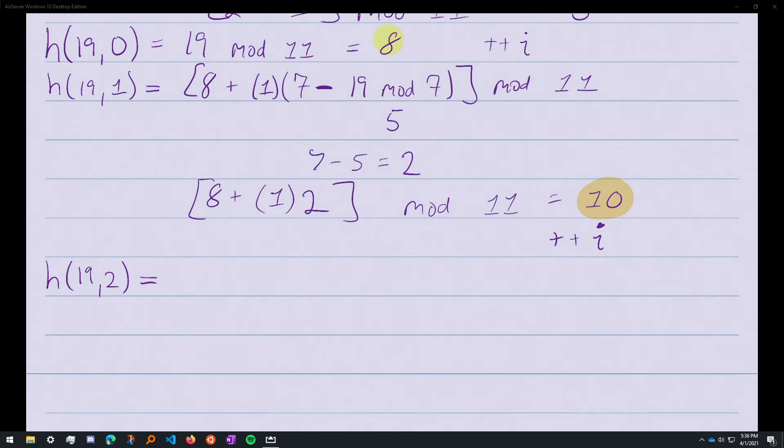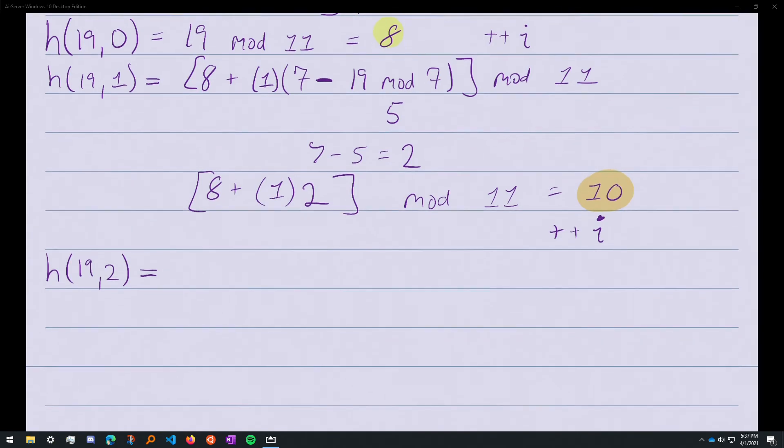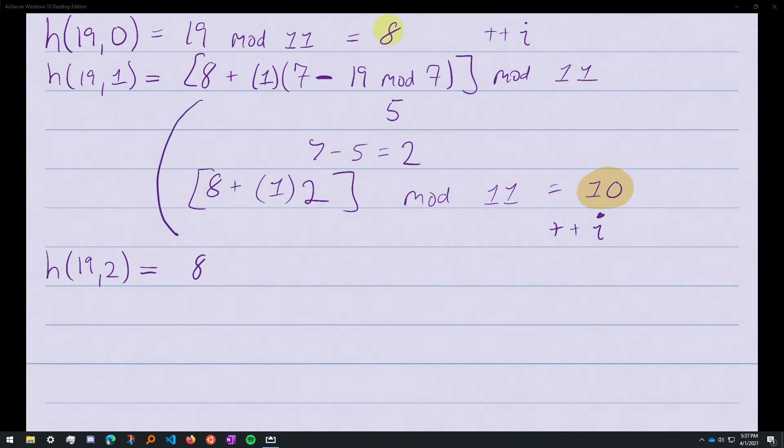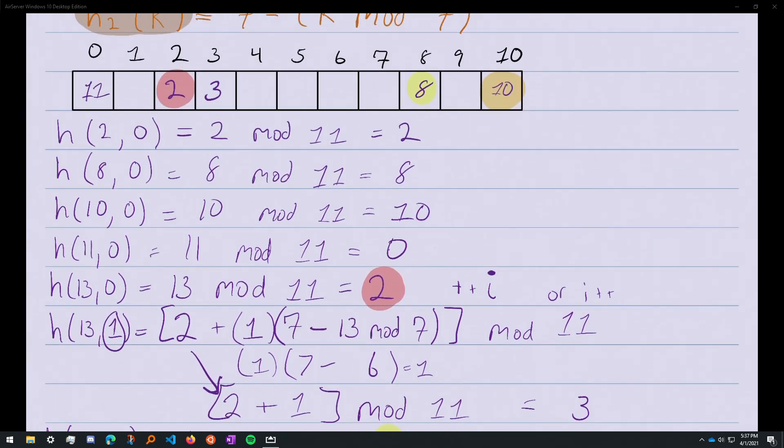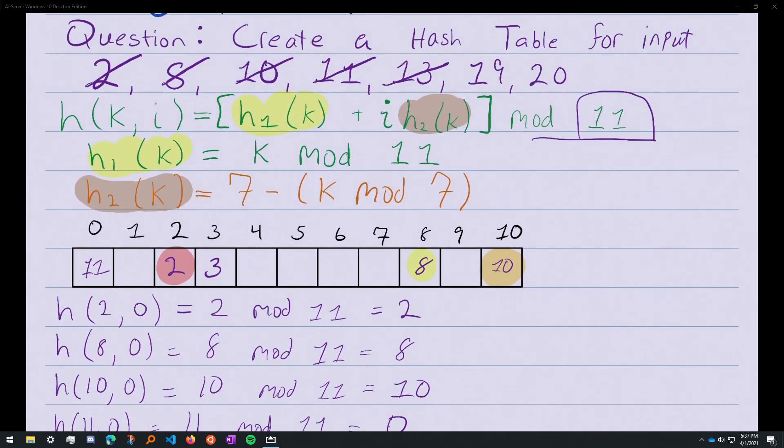Now at this point, we've already done a lot of work, so we can just bring some values down because the only thing that changed is the term with i. We bring down 8 again and add not 1 but 2 times the value we already calculated: 2. 7 minus 19 mod 7 did not change. Now we have 8 plus 4. 12 mod 11 equals 1. Can we put it into 1? We can. So, 19.